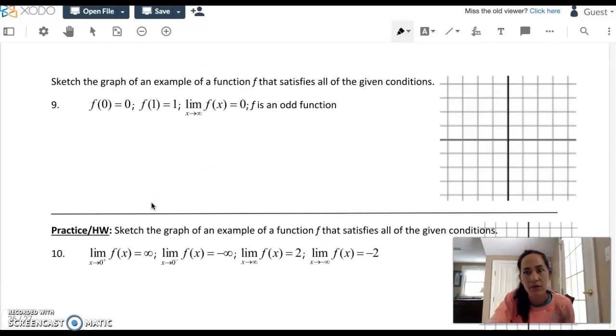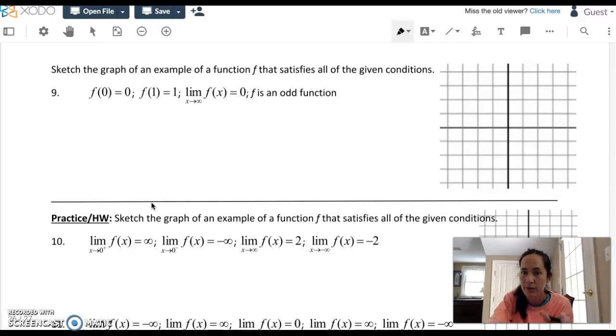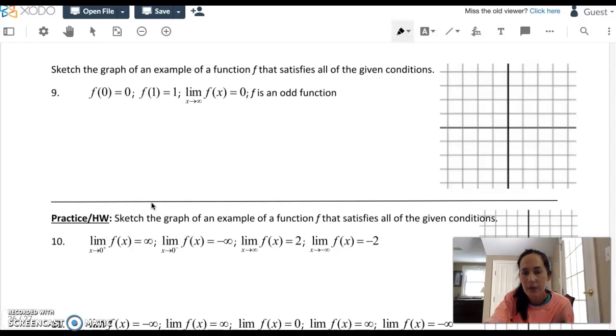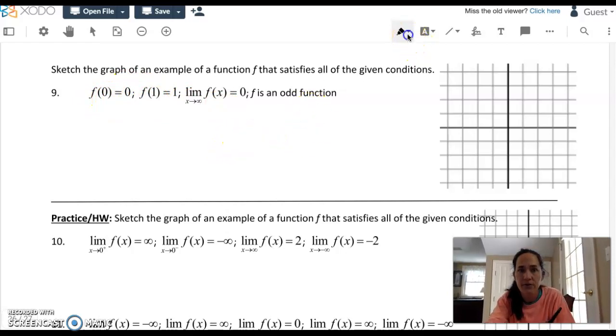The ones coming up that I really like are these ones where you have to be creative and sketch a graph with certain limit requirements being met as well. We could actually take the time to look at a couple on page 26. Let's look at 9. I always like to get the easy requirements out of the way first. So f of 0 has to be 0. I'll put a dot at the origin. f of 1 is 1. We could check that off too.